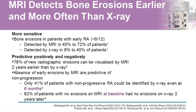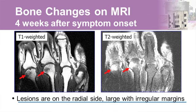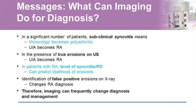The message is: by all means use the ACR-EULAR criteria — they'll do very nicely for long-standing disease and pretty well for patients with three months of disease. But they're not as good as they could be because they don't include all available evidence. Using imaging, we can turn subclinical synovitis into RA, and undifferentiated inflammatory arthritis into RA in the presence of true ultrasound findings. Imaging also identifies false positive erosions on x-ray.